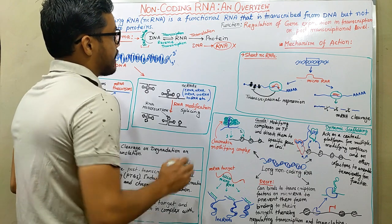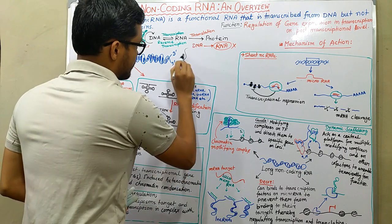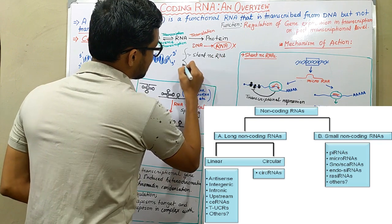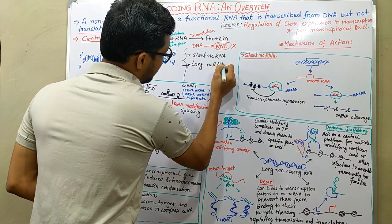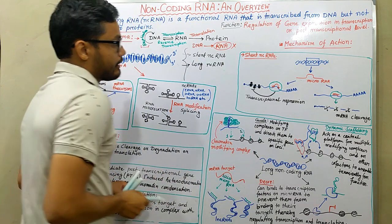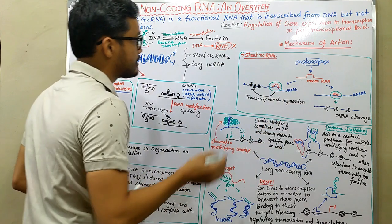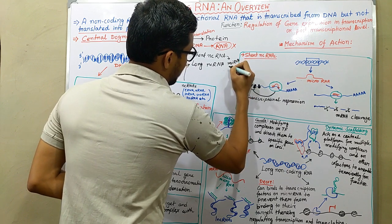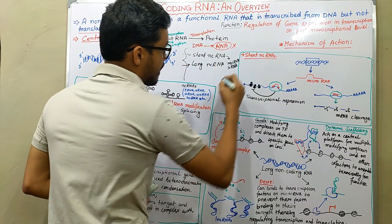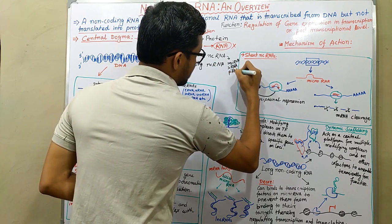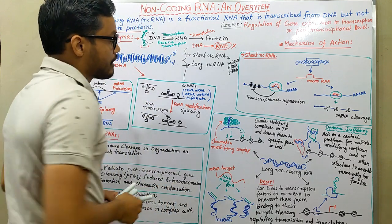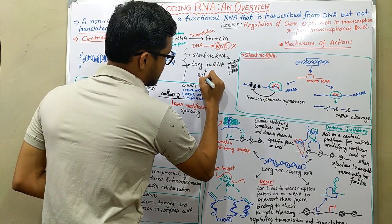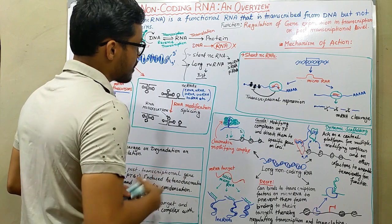Non-coding RNAs are classified into two major categories. The first one is short non-coding RNA and the second one is long non-coding RNA. Short non-coding RNAs are further classified into several categories. Examples of short non-coding RNAs are miRNA (microRNA), siRNA (small interfering RNA), and piRNA (PIWI-interacting RNA). An example of long non-coding RNAs is XIST — X inactivation specific transcript.